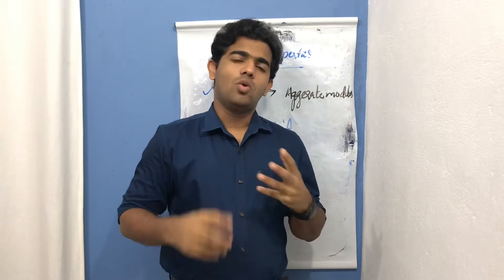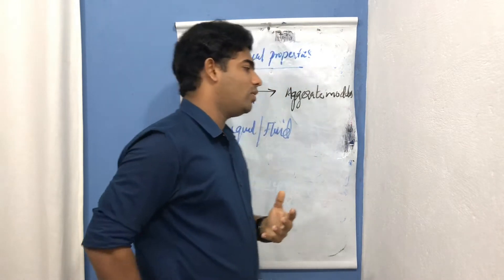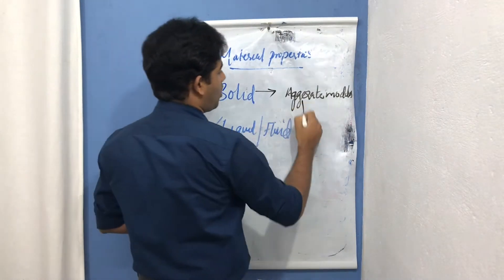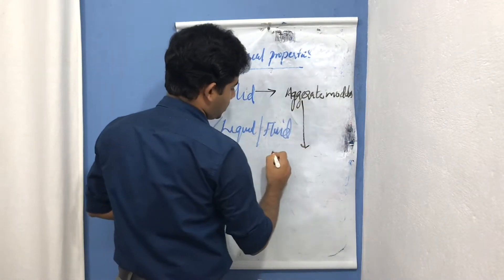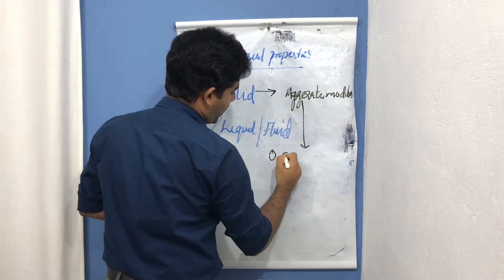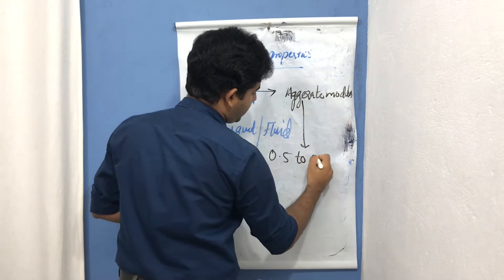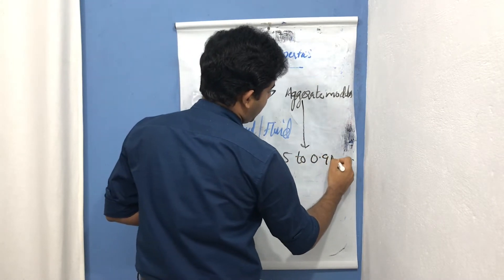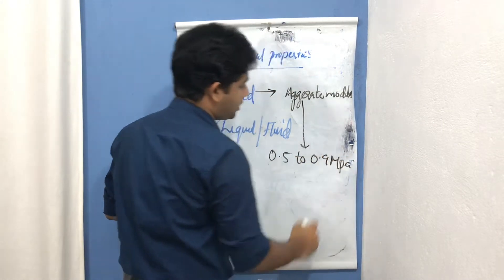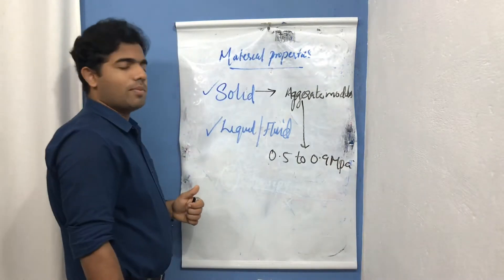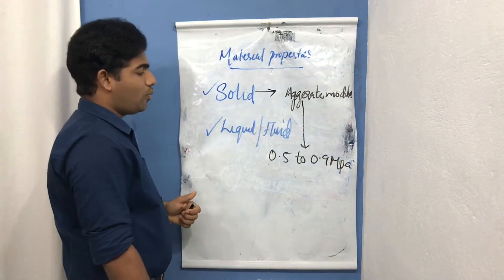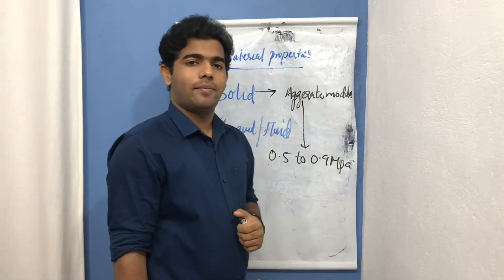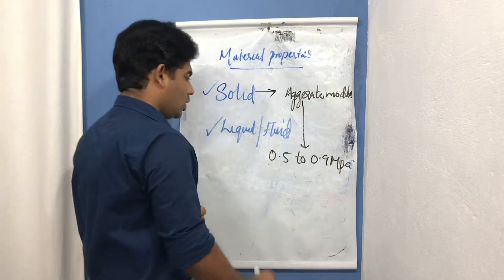The common value for aggregate modulus is about 0.5 to 0.9 megaPascals.